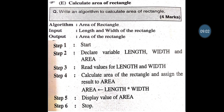Calculate the Area of a Rectangle. Algorithm name is Area of Rectangle. Input is Length and Width, because the formula is Length * Width. Output is Area of Rectangle. Step 1: Start. Step 2: Declare variables Length, Width and Area. Step 3: Read the values for Length and Width. Step 4: Calculate Area = Length * Width. Step 5: Display the value of Area. Step 6: Stop.